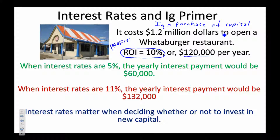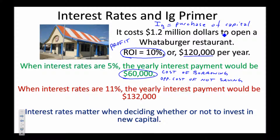Interest rates affect investment because they represent either the cost of borrowing or the opportunity cost of not saving. If interest rates are 5%, putting $1.2 million in the bank earns you $60,000, or borrowing $1.2 million costs $60,000 per year in interest. If you can earn a profit of $120,000, you'd still open the Whataburger because you'd realize $60,000 more than by saving.